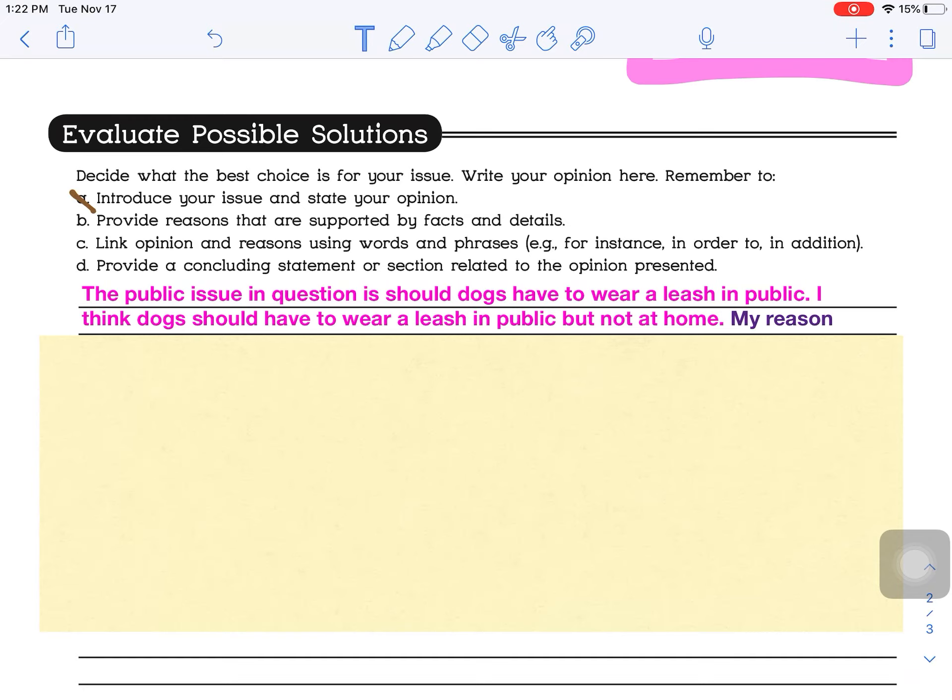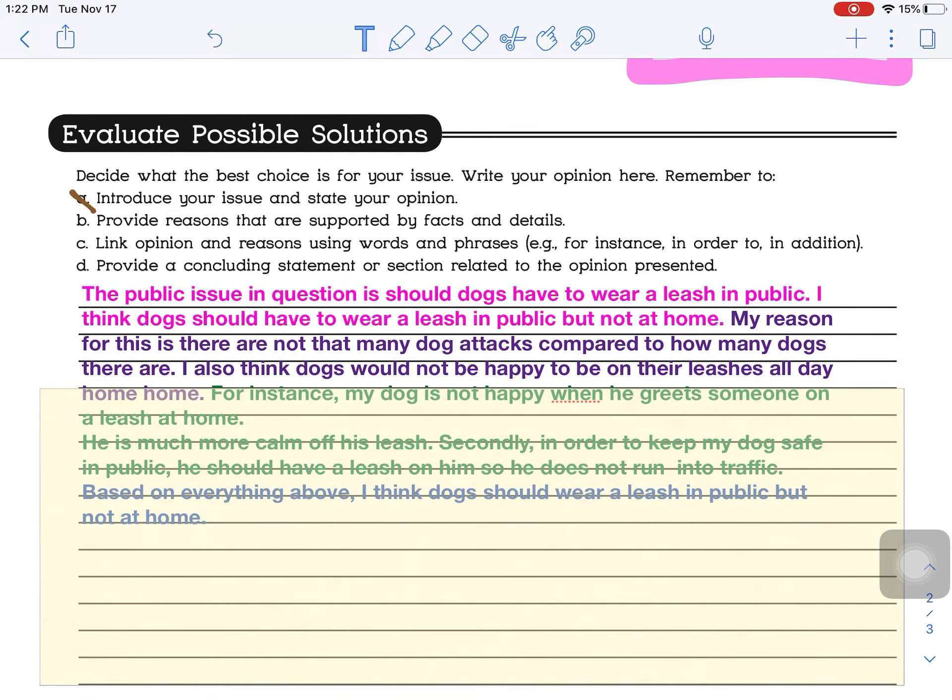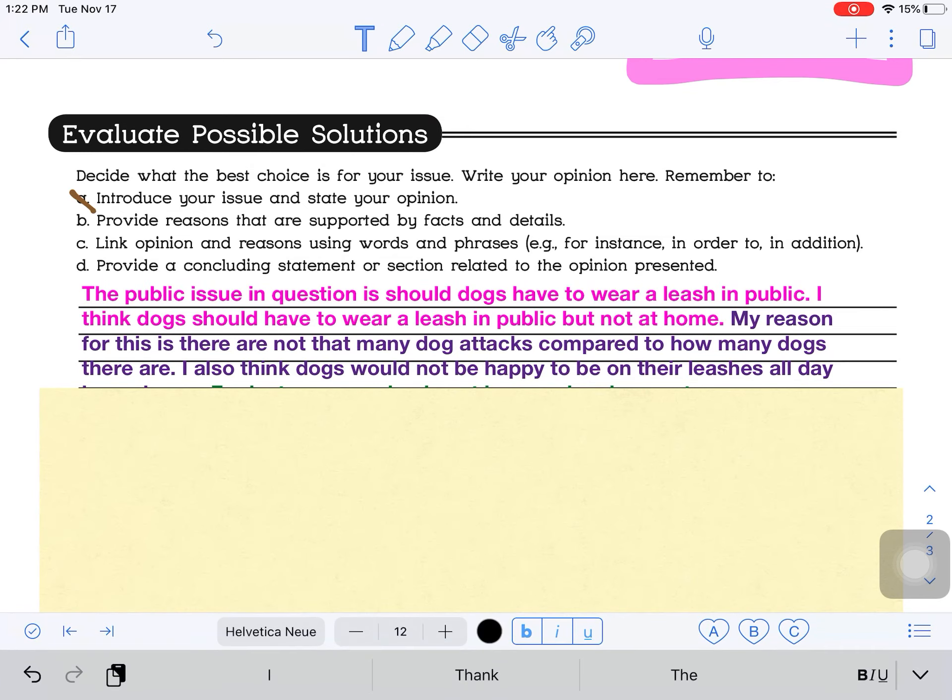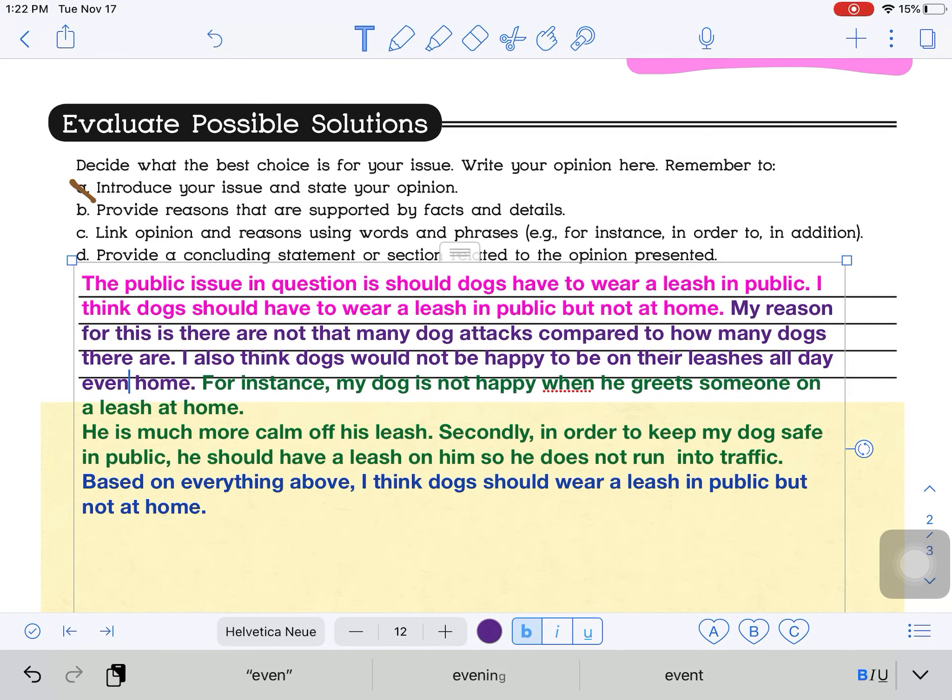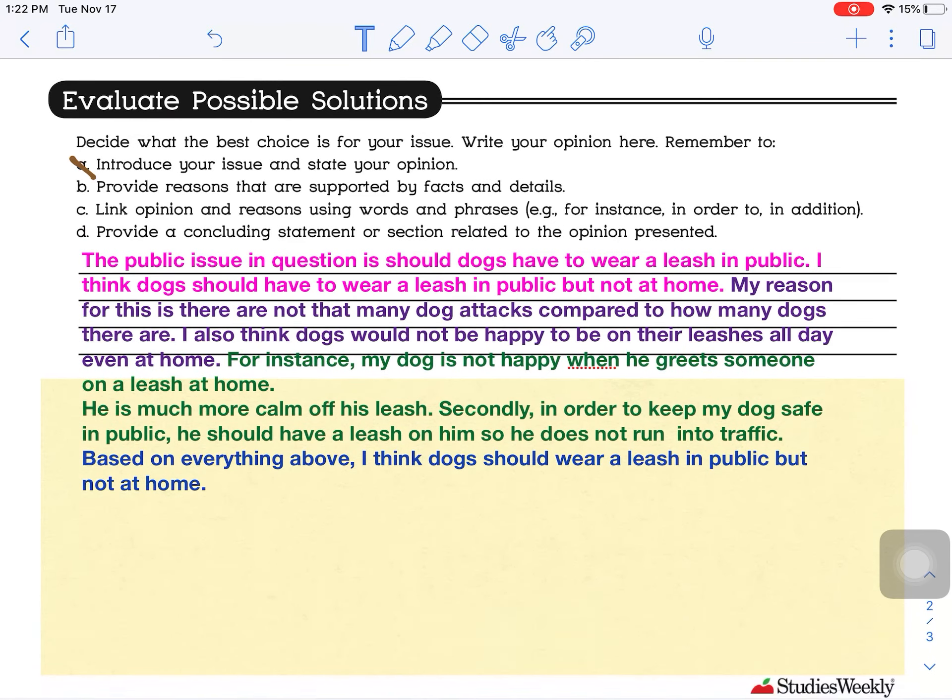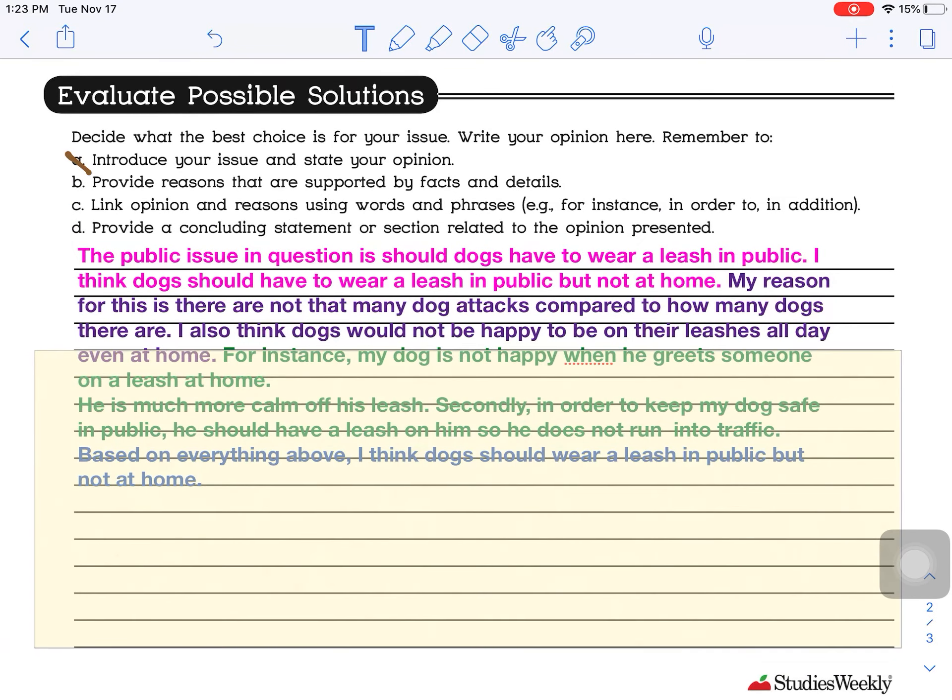Now I'm going to provide reasons that are supported by fact and details. So why do I think this? Well, I've been talking about it in my videos, and I've come up with reasons and facts to support my details. Here it is right here. My reason for this is there are not that many dog attacks compared to how many dogs there are. So again, here I just pulled from my research above. I also think dogs would not be happy to be on their leashes all day. And I need to actually fix this. This should say even at home. Oops, I need to get my, there we go. All right. So that would be my B. I have provided reasons that are supported by fact and details.